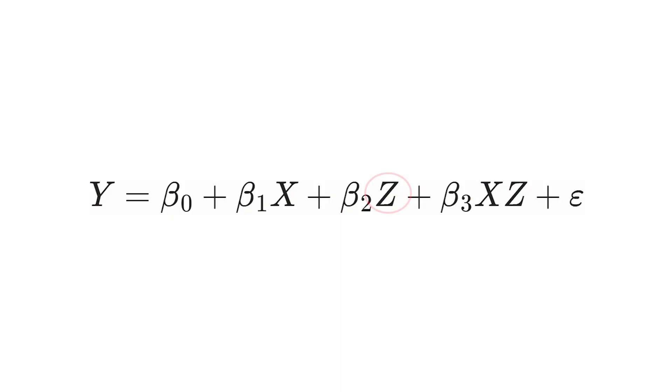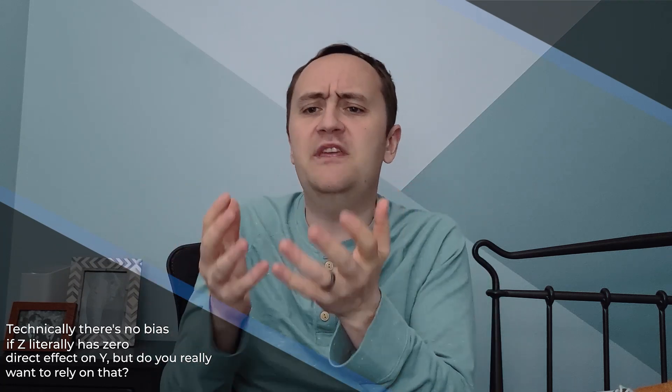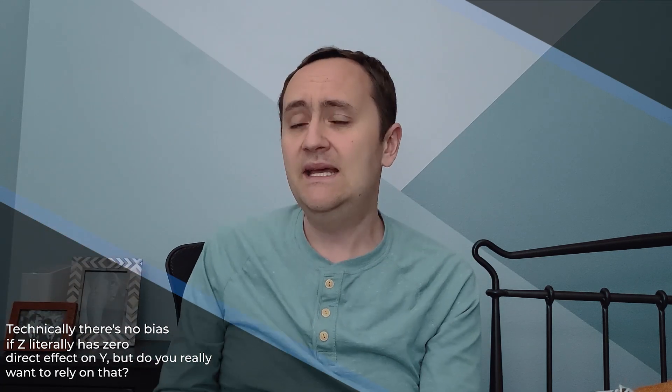Without the interaction term, the slope of x is not allowed to differ across groups — we need that interaction term. Also, I'm including z as a control by itself even though I'm not particularly interested in it. You pretty much always want to do this — never include x and the interaction term without also including z. Why? Omitted variable bias. If we leave z out, it goes into the error term, and the coefficient on the interaction term x times z would be mixed up, combining both effects. So z must stay in the model.